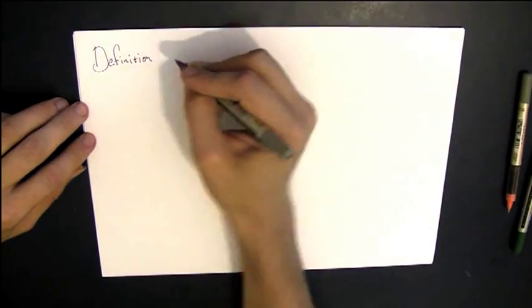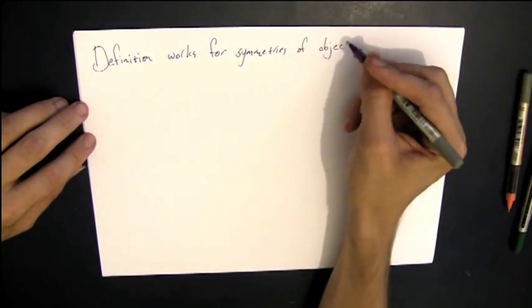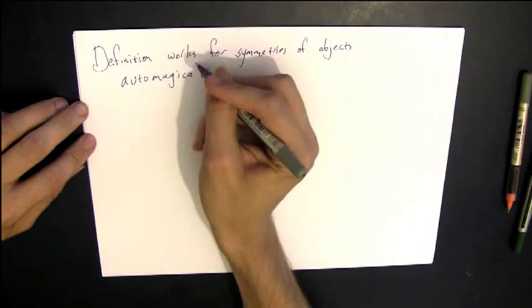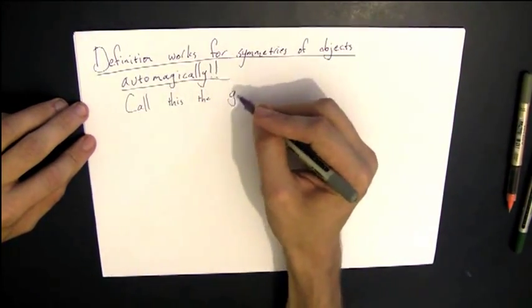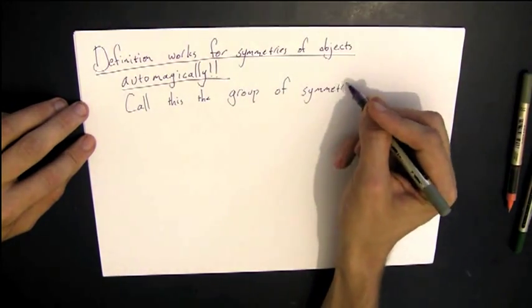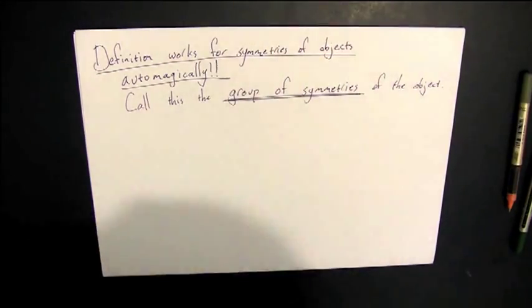So our definition, because we've adapted it from our idea of symmetries, is automatically going to work for symmetries of objects. So if I think of symmetries of a tetrahedron, that set of symmetries of the tetrahedron is automatically a group. And we're going to call that the group of symmetries of the object.